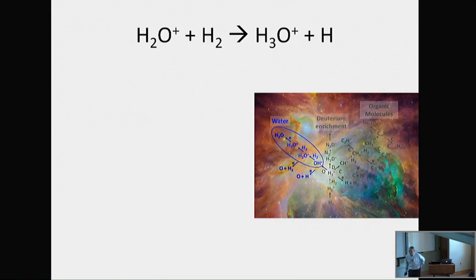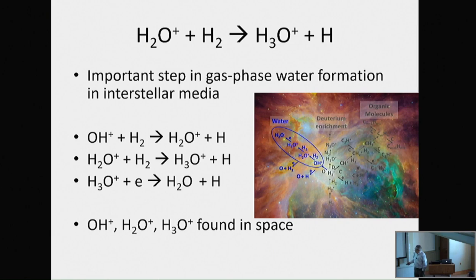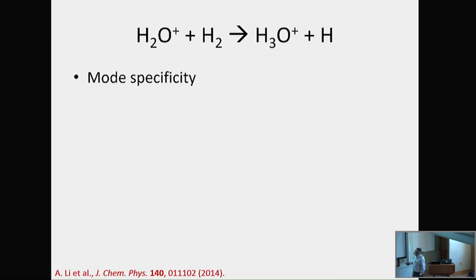The first reaction is an astrochemical reaction. There are a lot of discussions about water formation in interstellar media. This is one particular route that involves ion molecules. Essentially what you do is have OH+, have hydrogen grab the hydrogen, you form another hydrogen atom, and you go through this process. Eventually you end up with H3O+, which in chemistry we call the hydronium ion. That is the acid in solution, but this is in the gas phase, and it combines with an electron to form water. This reaction has been discussed in detail and has been found recently with satellite-borne telescopes.